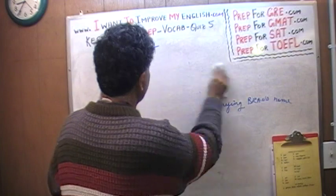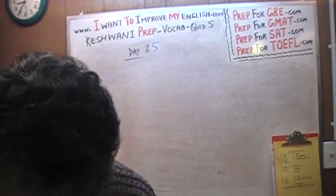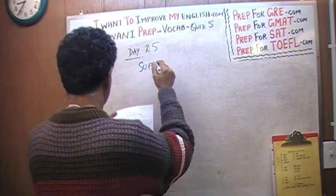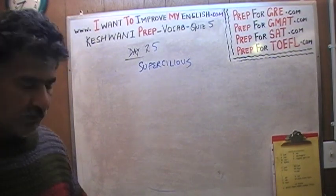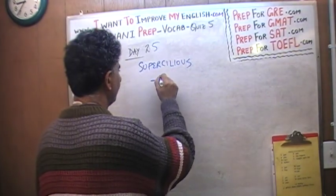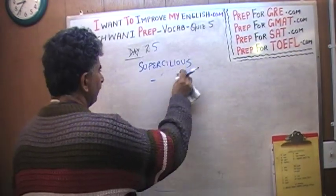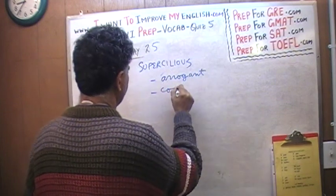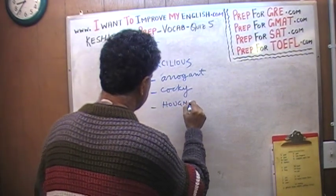Last day — day number 25. The very first word we covered was 'supercilious.' Supercilious simply means arrogant, cocky, haughty — this word is pronounced 'haw-tee' — and conceited. Supercilious means to be conceited, to be arrogant, to be cocky, to be haughty, to be excessively proud of yourself.